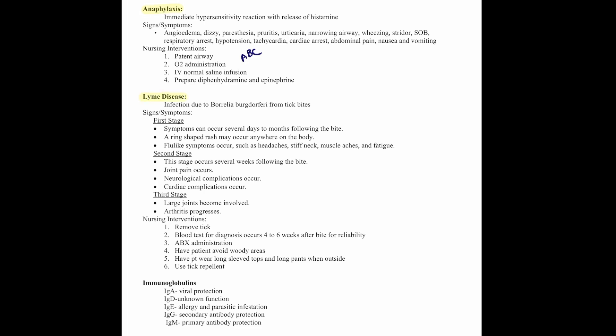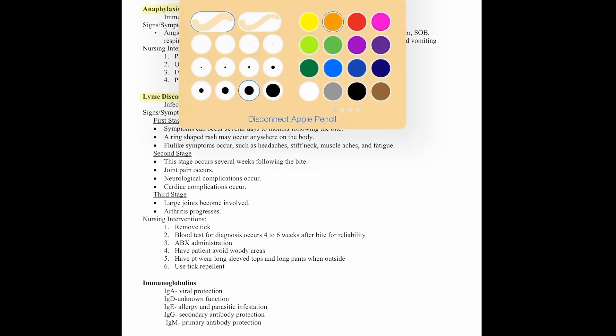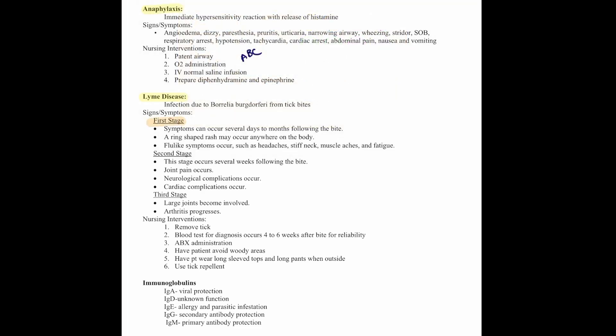Lyme disease is an infection due to Borrelia burgdorferi from a tick bite. There are three stages. In the first stage, symptoms occur several days to months following the bite — a ring-shaped rash may appear anywhere on the body; this is key. If a question mentions a ring-shaped rash, think Lyme disease. Flu-like symptoms include headache, stiff neck, muscle ache, and fatigue. The second stage occurs several weeks after the bite, with joint pain, neurological complications, and cardiac complications.